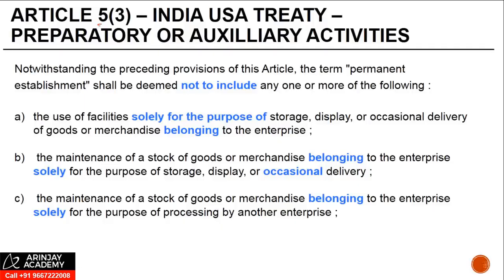Moving on to Article 5, Paragraph 3. This basically deals with what are some of the preparatory or auxiliary activities which are not treated as a permanent establishment under the India-USA treaty. Now, let's first read it and then we'll come to the explanation.